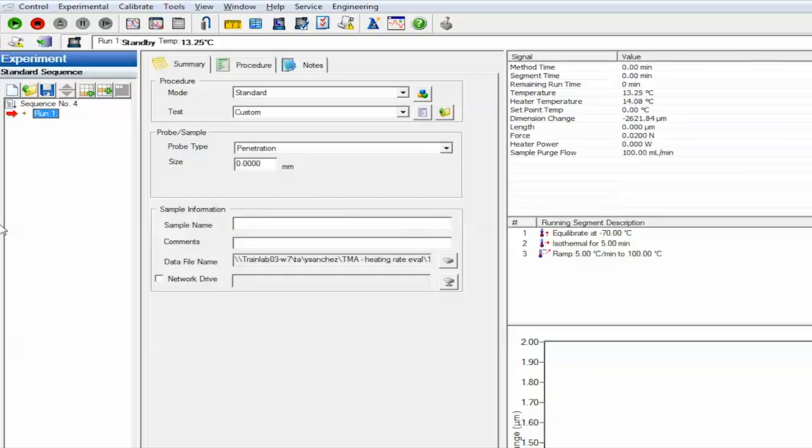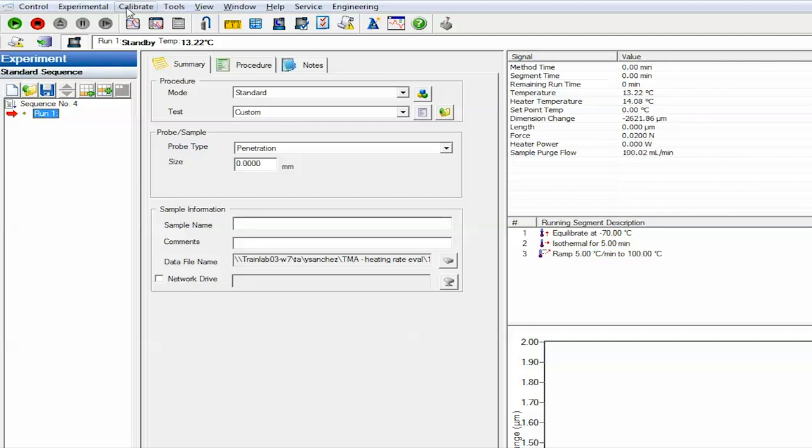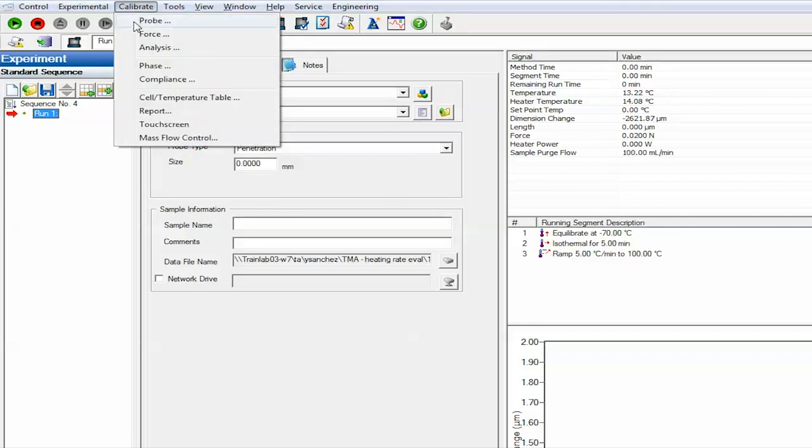Remember you need to calibrate the probe since you switched probes. You do so by selecting calibrate, probe, verify the probe type, and click calibrate.